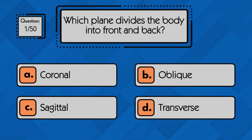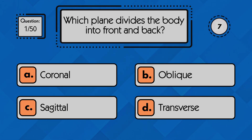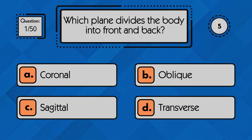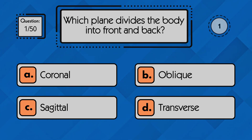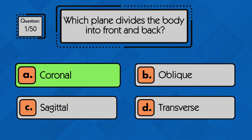Which plane divides the body into front and back? The body is divided into front and back by the coronal plane.